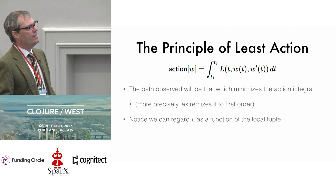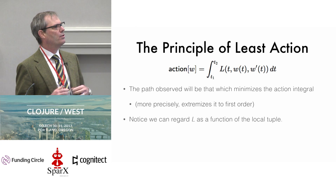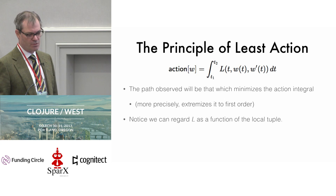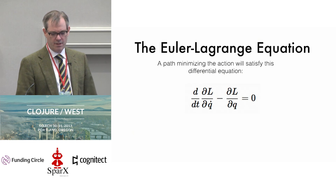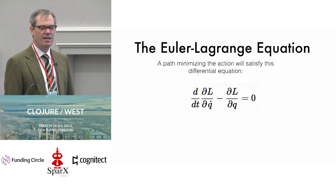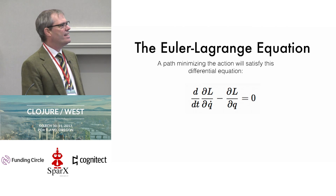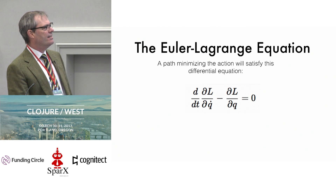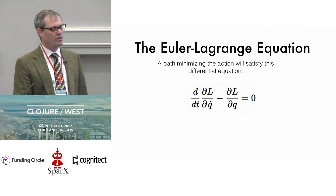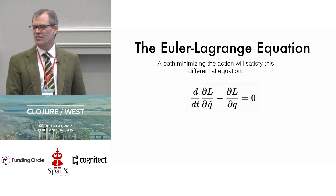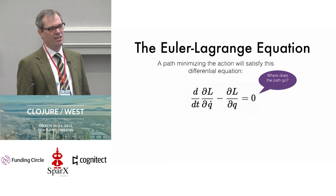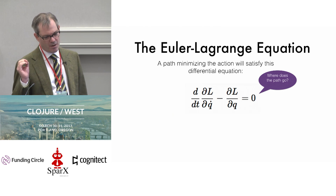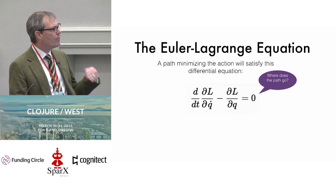If you look at L inside the integral — our Lagrangian — it looks like a function of our state, sometimes called the local tuple of path W: t, W, and its first derivative. The idea might be: can I program a computer to solve that? Can we find the W that minimizes that integral? There's a theorem: a path that minimizes the action integral also satisfies the Euler-Lagrange differential equation. If we could convert this into code, we could find the paths that objects take in real life — except it doesn't say where to put the path.